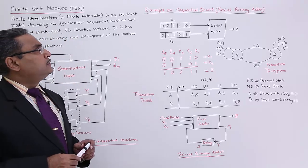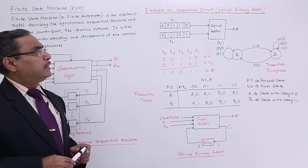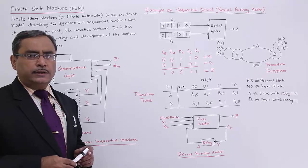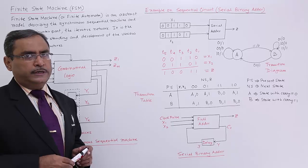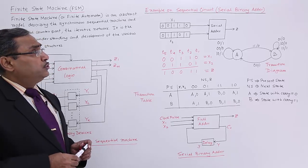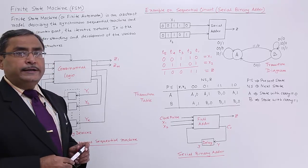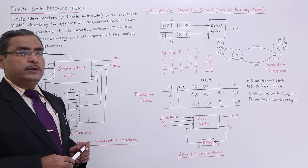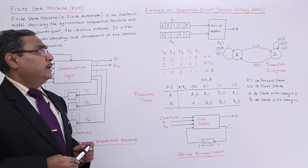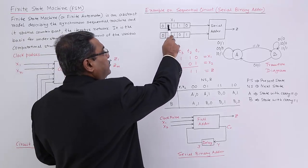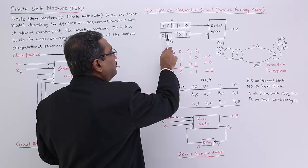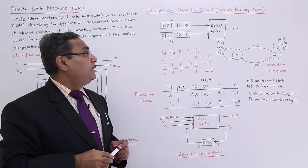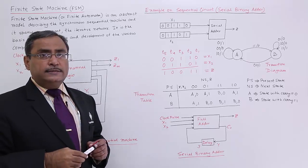Let us discuss a sequential circuit example: the serial binary adder, a very simple circuit you may have encountered in digital electronics. Suppose we have two numbers, X1 and X2. X1 has the bit pattern 00110 and X2 has the bit pattern 01101. These are taken arbitrarily.